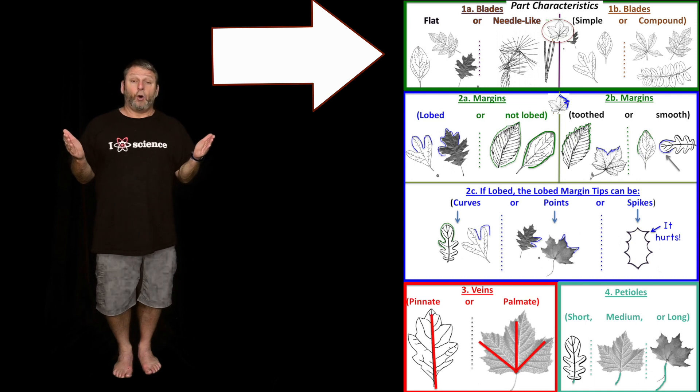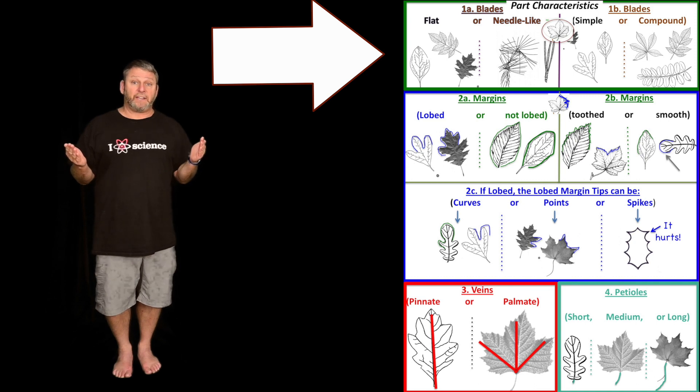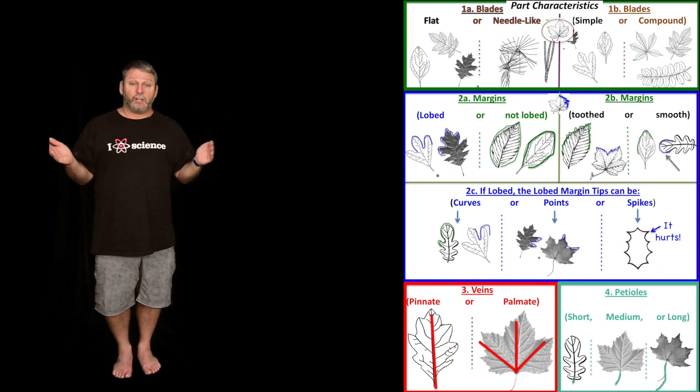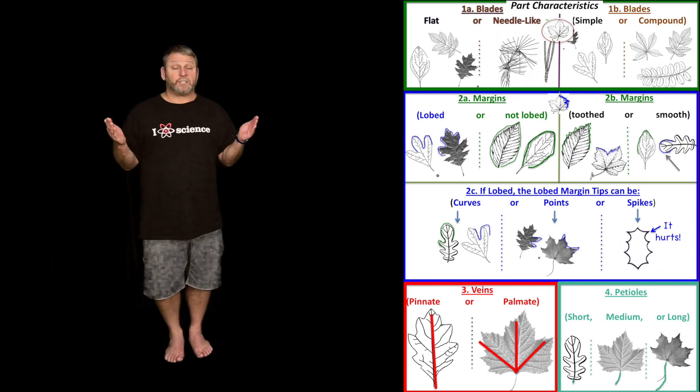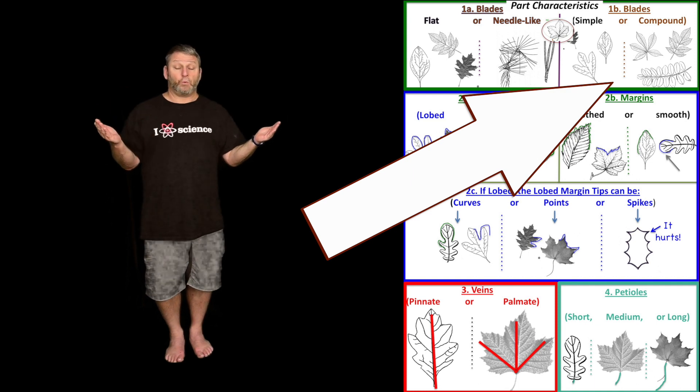We start with the blade, or the whole leaf, and we look at the box in the top left corner. Our first choice about the blade is: is the blade flat or needle-like? We make a choice between one of the two. Our next choice is also about the blade. Is it simple or compound? We choose one.